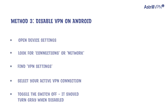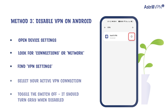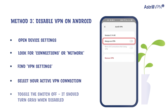Method 3: disable VPN on Android. Open device settings and look for connections or network. Find VPN settings, select your active VPN connection, and toggle the switch off — it should turn gray when disabled.